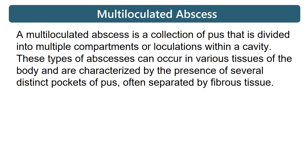A multi-loculated abscess is a collection of pus that is divided into multiple compartments or loculations within a cavity. These types of abscesses can occur in various tissues of the body and are characterized by the presence of several distinct pockets of pus, often separated by fibrous tissue.